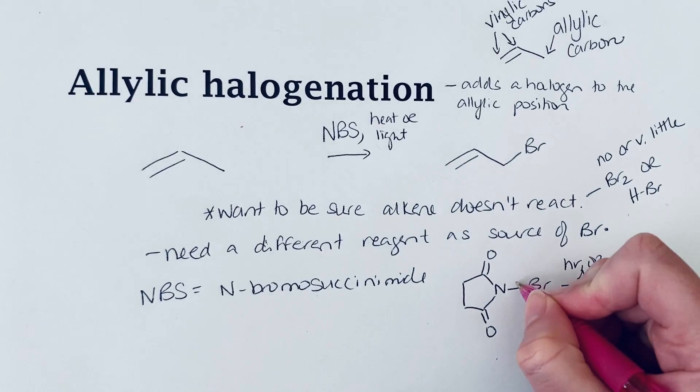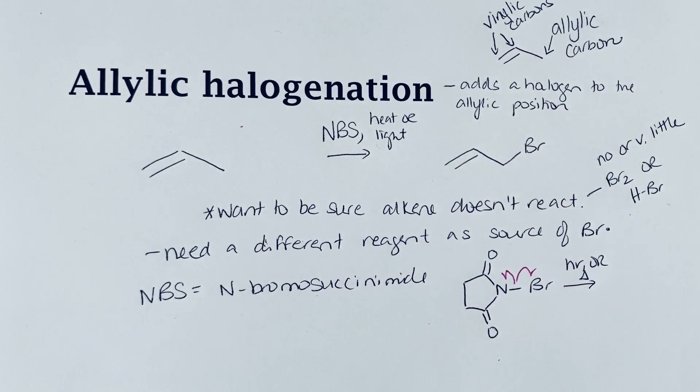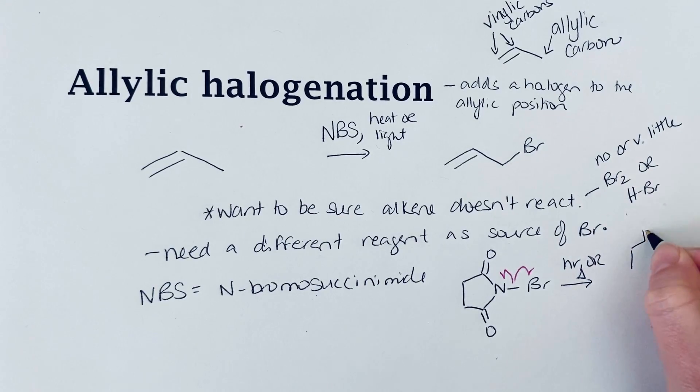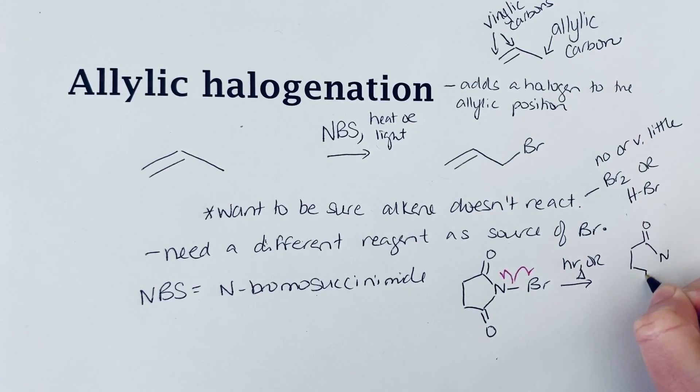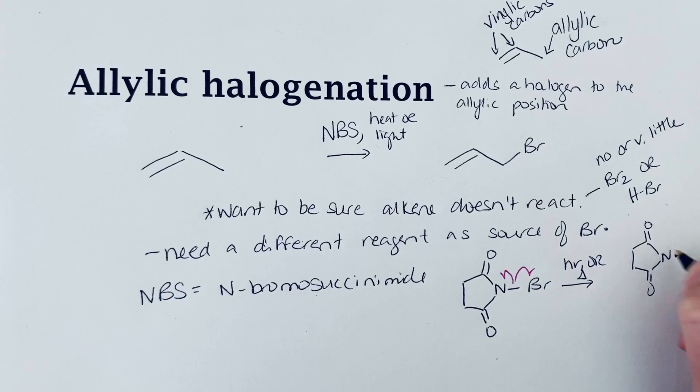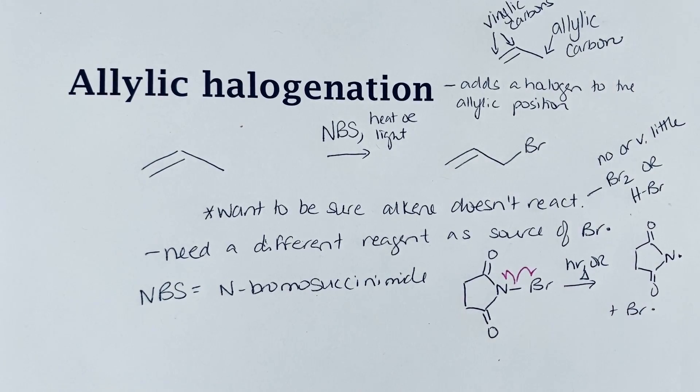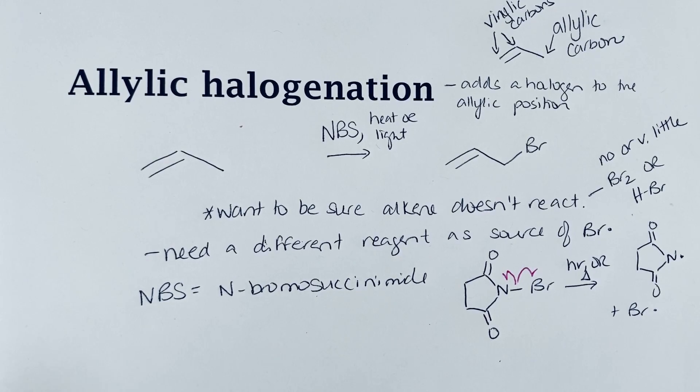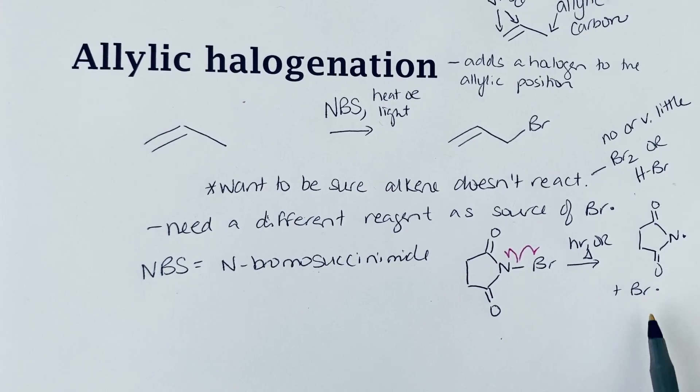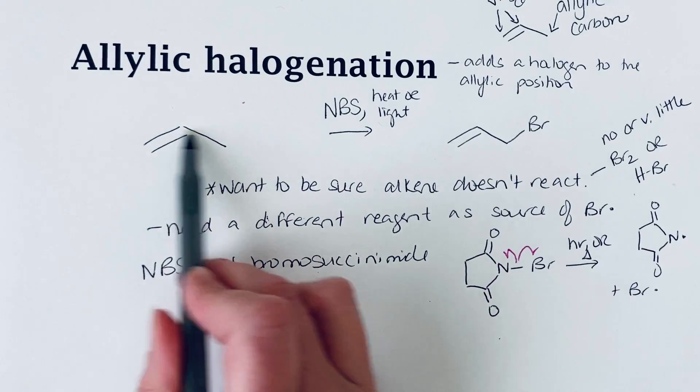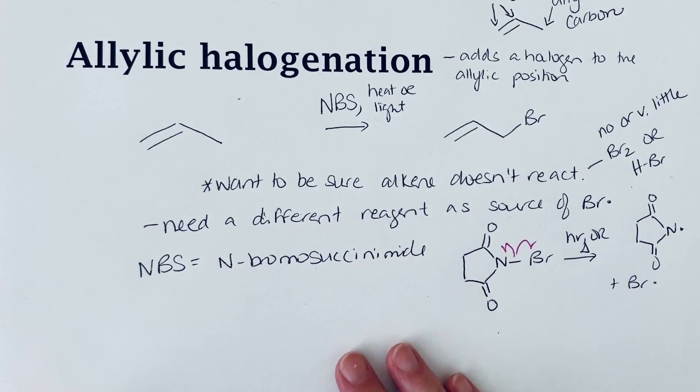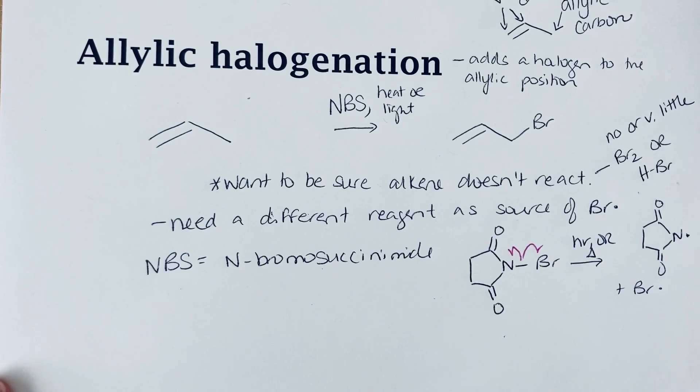This can cleave and you're going to get two radicals, only one of which we're concerned with, and that is the bromine radical. This provides a low concentration of bromine radical. Then this bromine radical can react with your alkene at the allylic position.